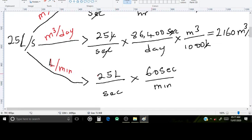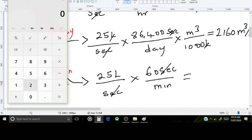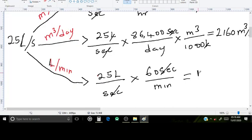so it becomes minutes, we multiply by this. Let's cancel the seconds. Let's type it into a calculator: we have 25 times 60, so we have 1500 liters per minute.